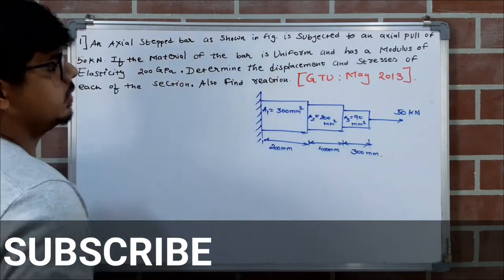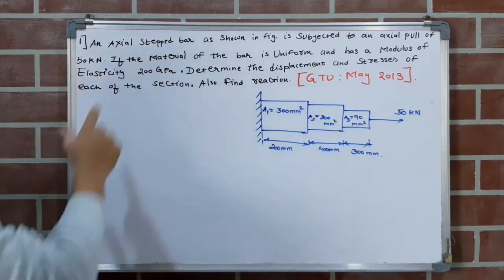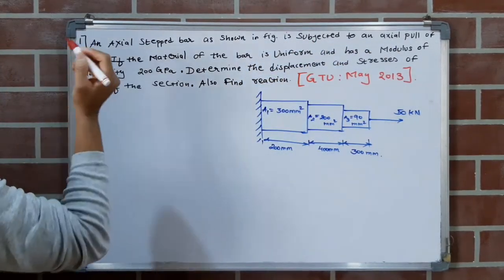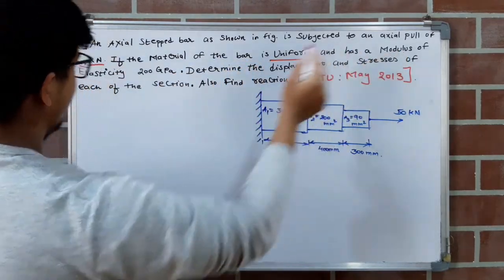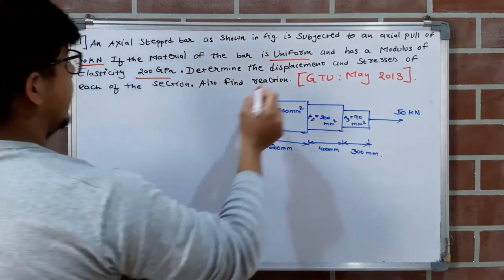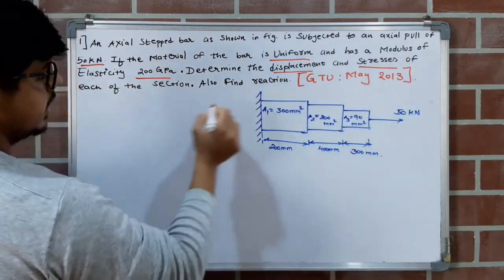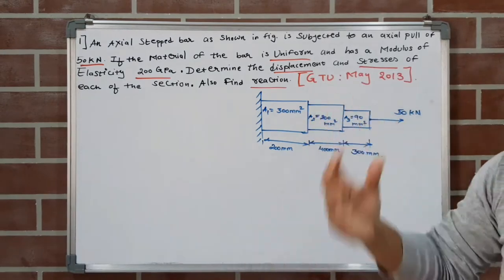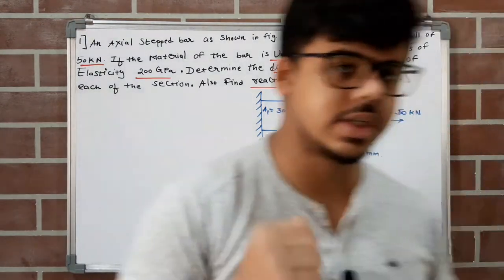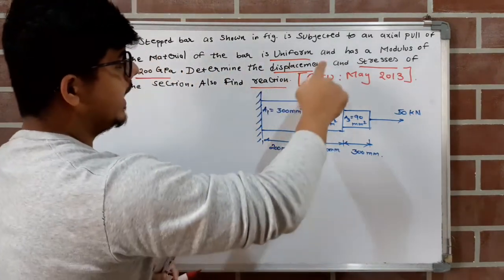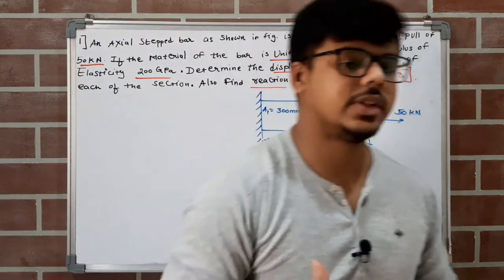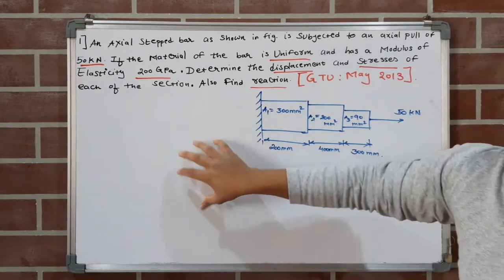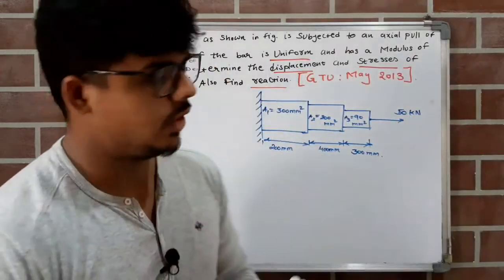This problem is from GIDU exam. An axial step bar as shown in the figure is subjected to an axial pull of 50 kilo-newton. The material of the bar is uniform and has modulus of elasticity 200 gigapascal. We need to determine the displacement, stress, and reactions. We have three unknown quantities but we have only discussed displacement, so we will find displacement first and solve stress and reactions in upcoming videos.